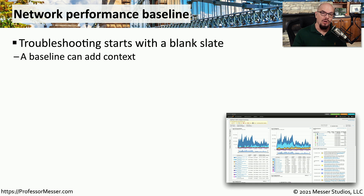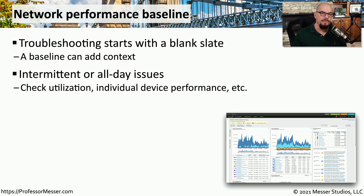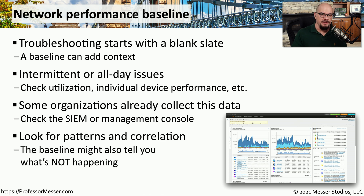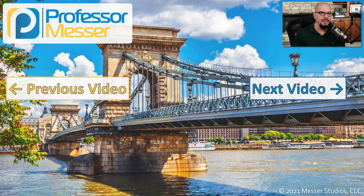Sometimes problems can occur over a long period of time, so it might be useful to see a series of trends or a baseline of information to recognize where problems might be occurring. This may allow you to see overall network utilization at certain times of the day, or drill down into a specific device to see exactly what that user may be doing. Your organization may already be collecting this information — taking logs and consolidating them in a SIEM, or using NetFlow or some other collection mechanism to see statistics over a long period of time. From here, you can look at certain times of the day, identify what protocols may be traversing the network, and look for any errors or problems associated with those conversations.